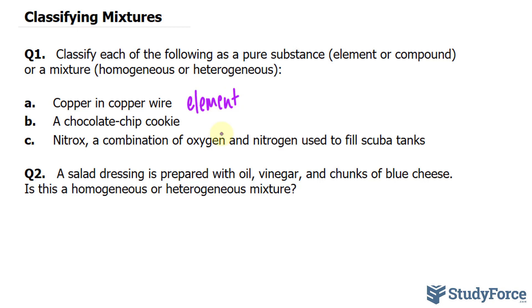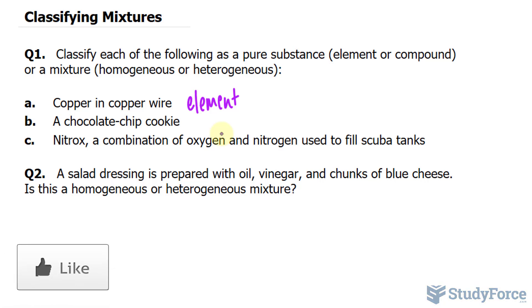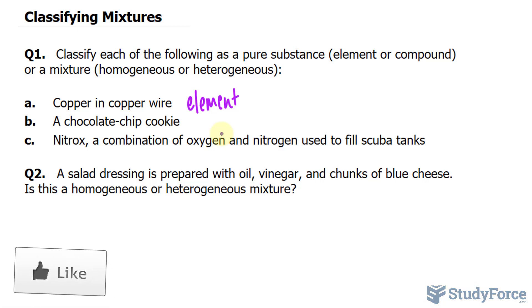The next one: a chocolate chip cookie. A chocolate chip cookie consists of, obviously, chocolate, dough, oils, and a lot of other components. So this is a mixture, and specifically, it's a heterogeneous mixture.